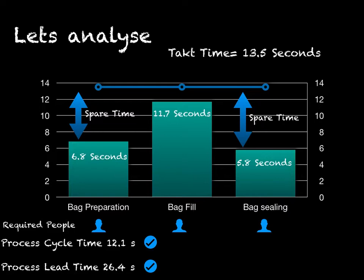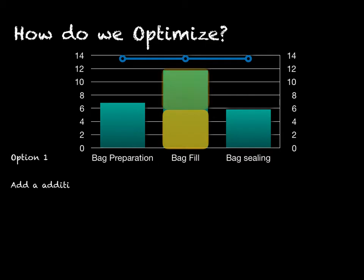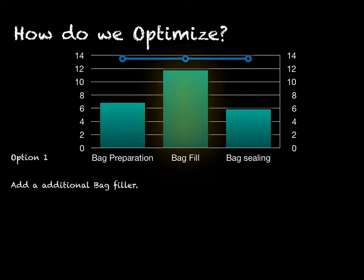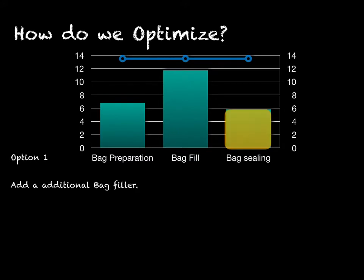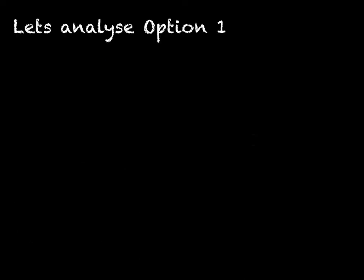How can we optimize this process? First, look at the tallest bar — the one closest to the takt time. If your process is not complying with lead time or takt time, you can split the time by adding one more process. For this example, add one more person filling bags. If you comply with takt time and lead time, try to combine operations — see if process 1 and 3 can be added together. If the addition of both times is less than takt time, then this is a possible solution.